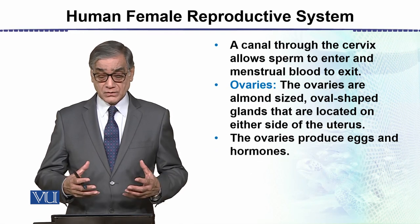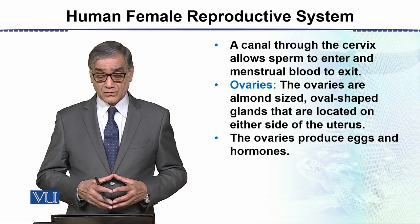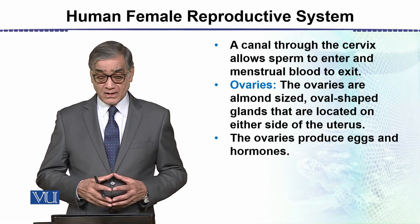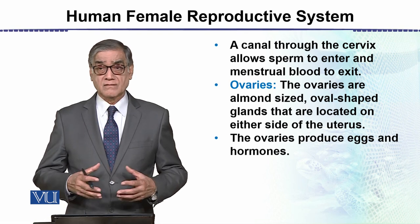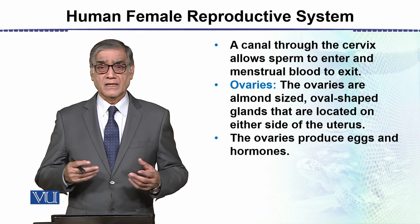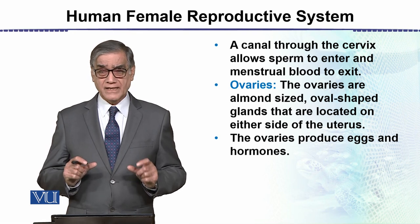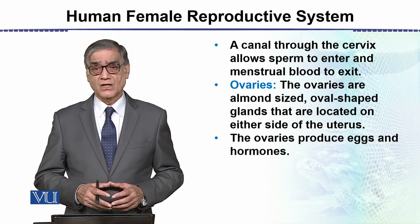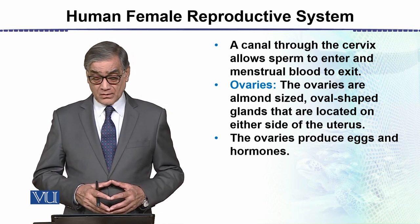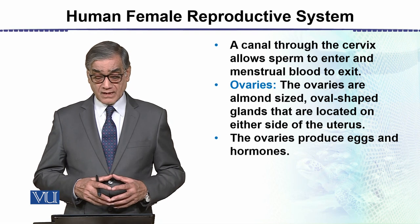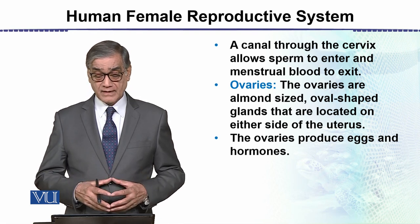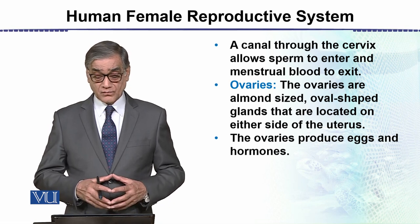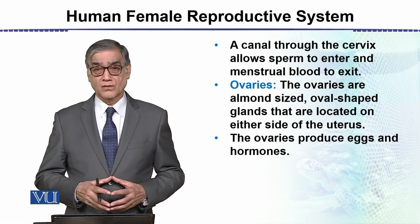Through the cervix, the uterus allows sperms to enter and menstrual blood to exit. The ovaries, as we saw in the diagram, are almond-sized, oval-shaped glands located on either side of the uterus. The ovaries produce eggs and hormones.